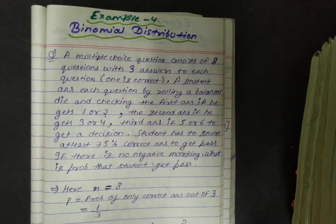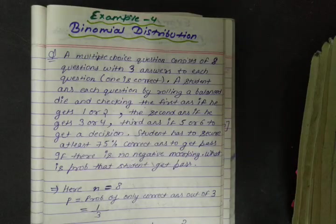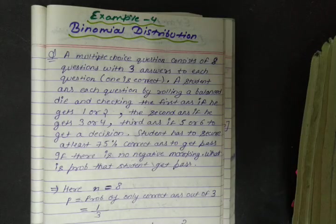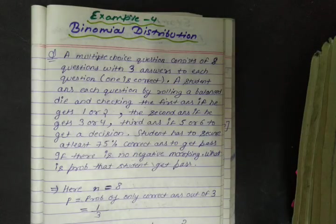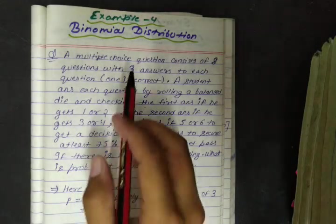In this video I will explain example 4 related to binomial distribution. This is a bit more difficult than the previous questions. The question is given to us like this.